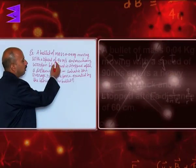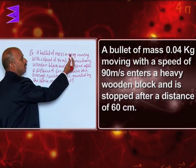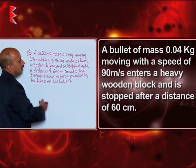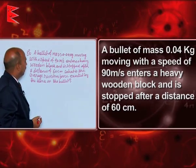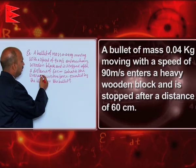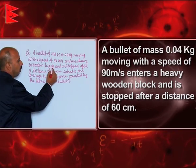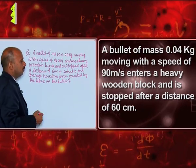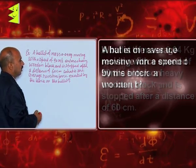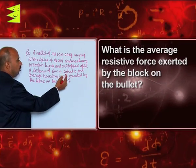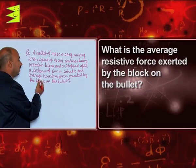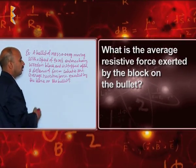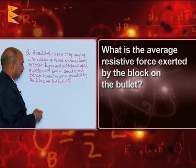A bullet of mass 0.04 kg moving with a speed of 90 meters per second enters a heavy wooden block and is stopped after a distance of 60 centimeters. What is the average resistive force exerted by the block on the bullet?